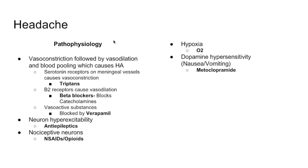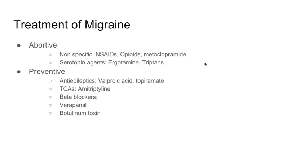So to summarize the pathophysiology of headache: vasodilation and blood pooling, neuron hyperexcitability, nociceptive receptors in the neurons, hypoxia, and dopamine hypersensitivity.